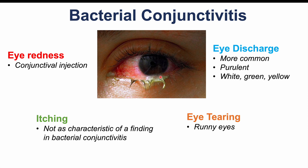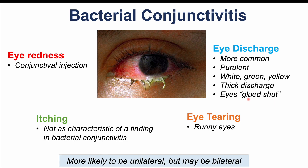The discharge can be quite thick, quite a lot, and quite sticky as well. Overnight, if patients fall asleep and wake up in the morning, their eyes and eyelids can essentially be glued shut — all that discharge dries and causes the eyelids to stick together, making it very difficult to pull the eyelids apart. Bacterial conjunctivitis is more likely to occur unilaterally, meaning usually only one eye is affected, though in some cases both eyes can be affected.